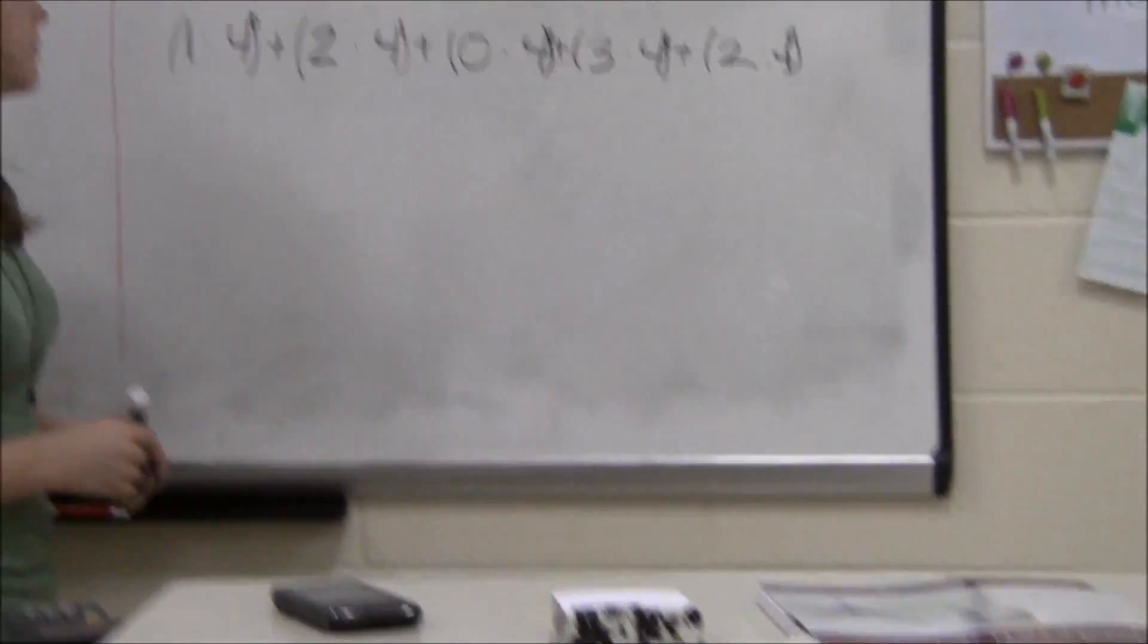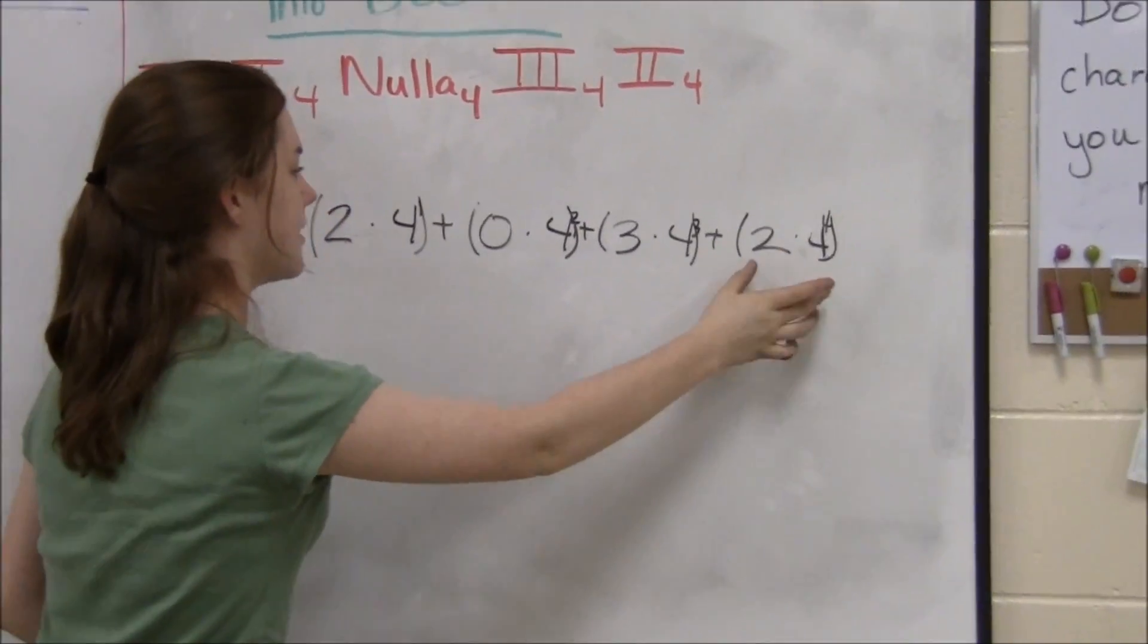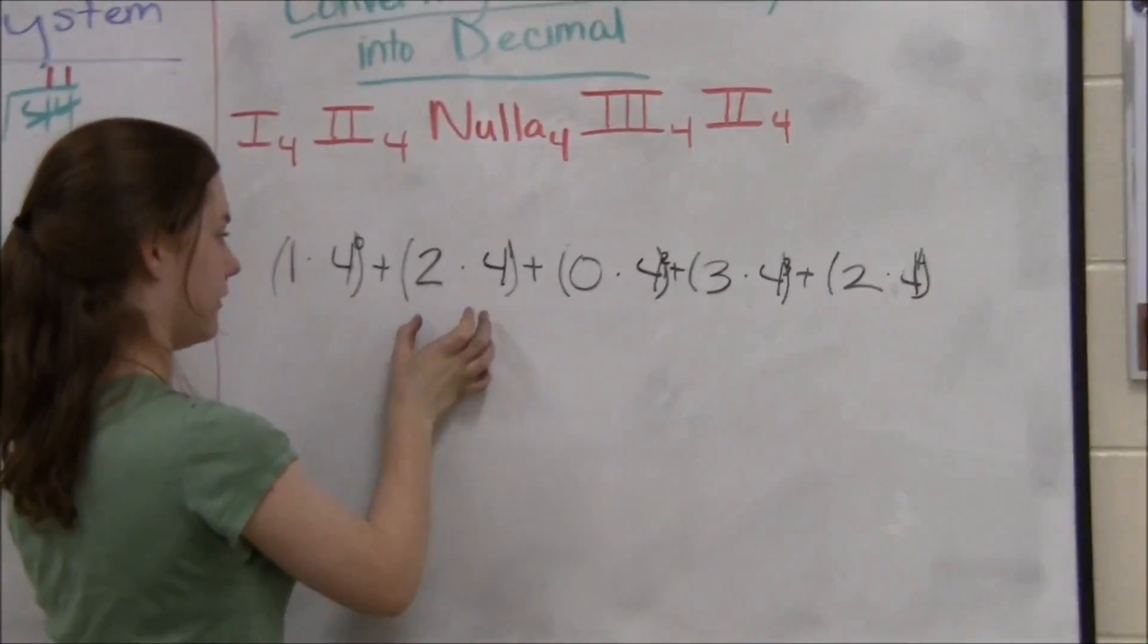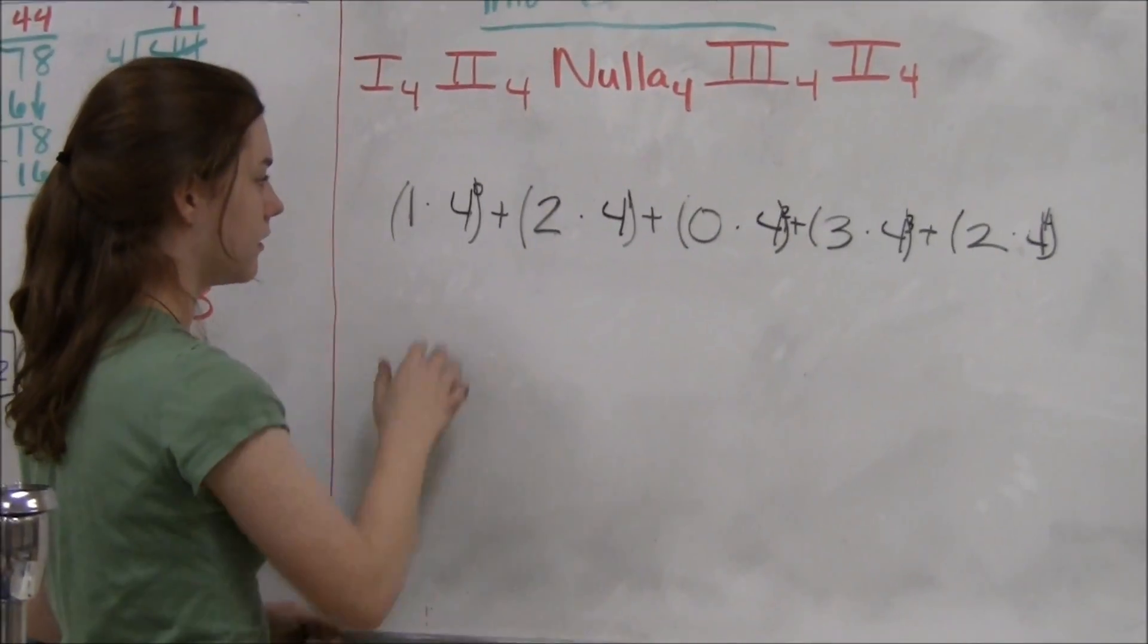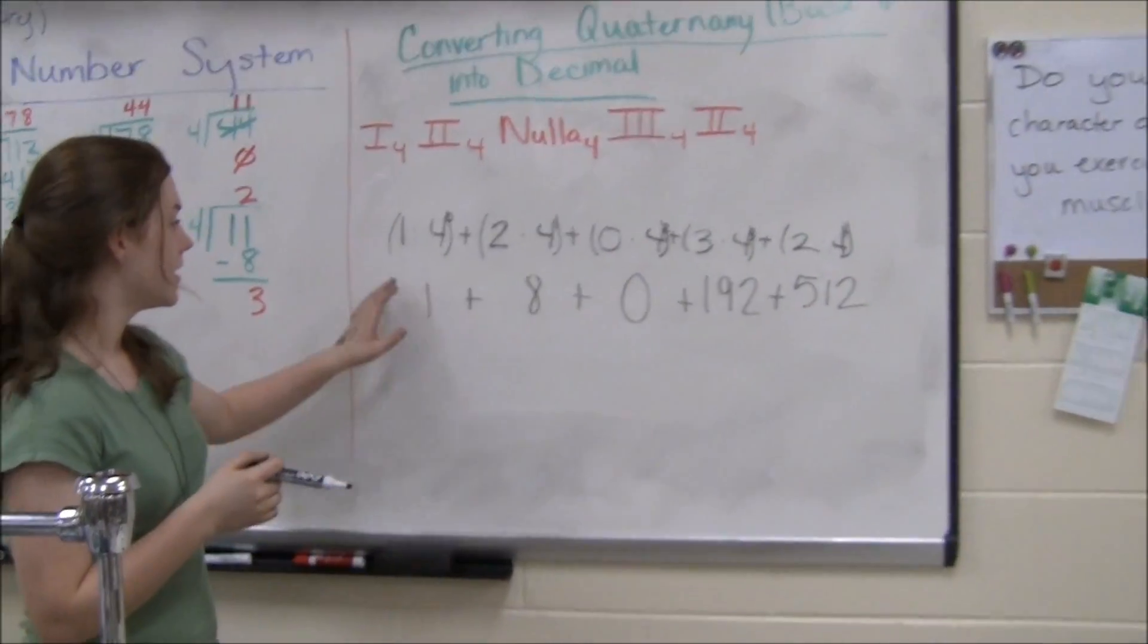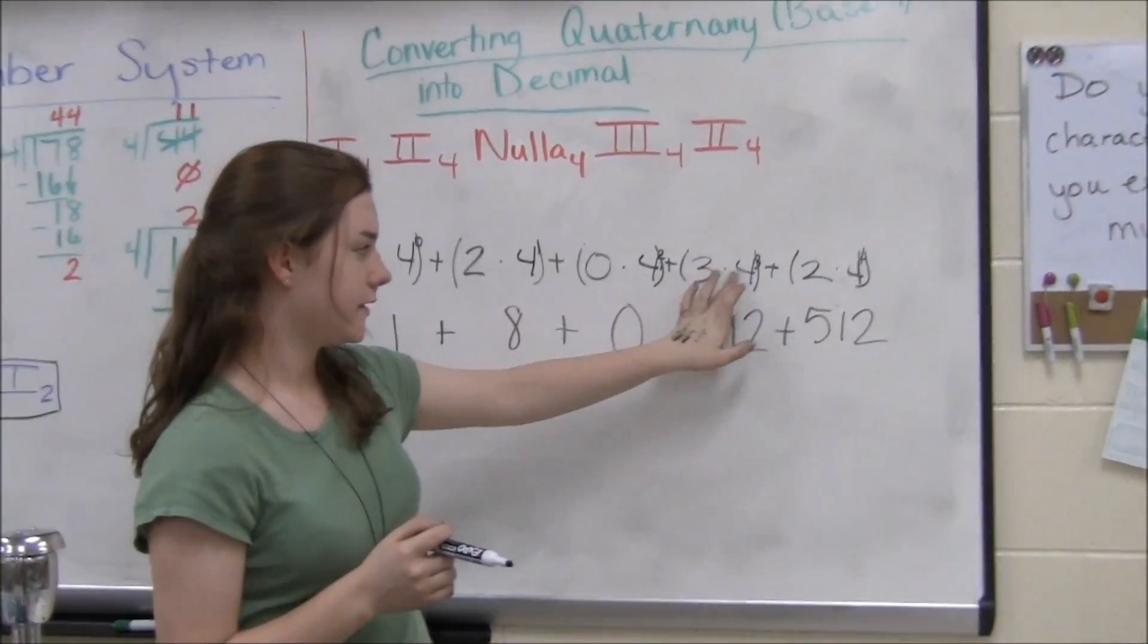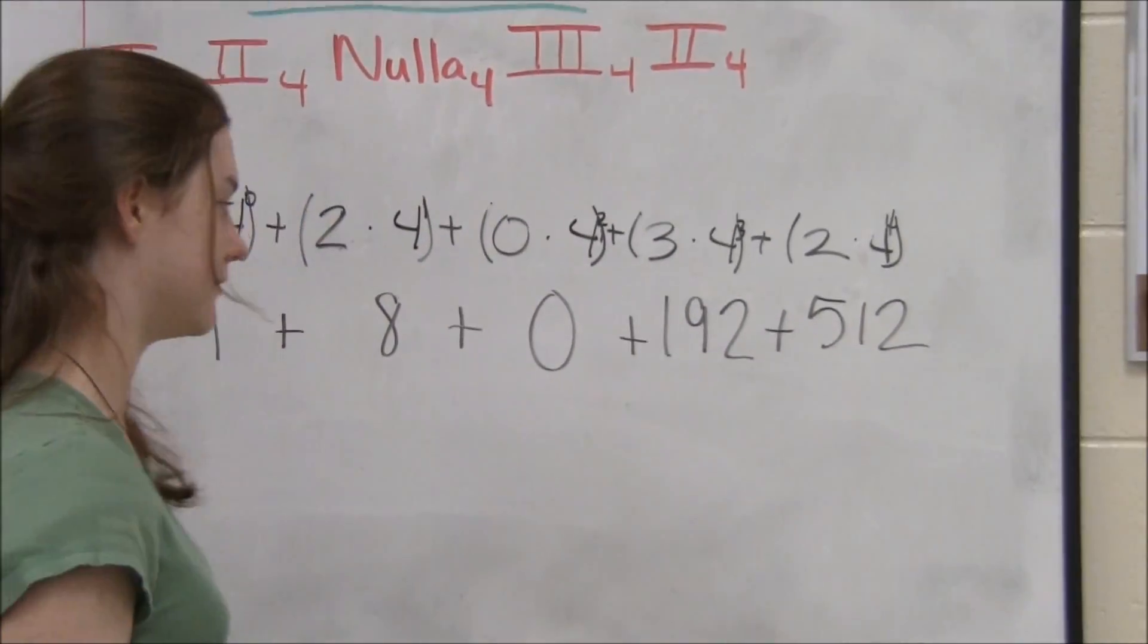Then we will find the exponent value of the base 4 and then multiply it to itself each time. Now that we've multiplied all of these out, we can add 1, 8, 0, 192, and 512 together.